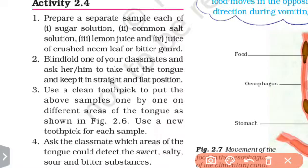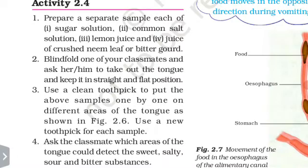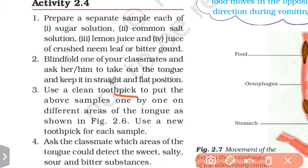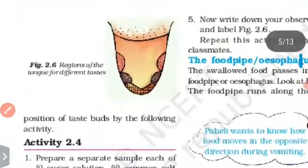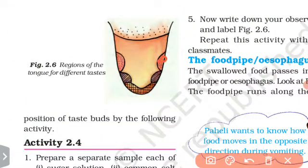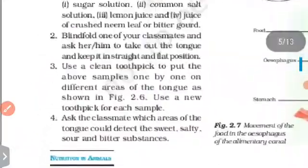Blindfold a classmate and ask them to take out their tongue and keep it in a straight and flat position. Use a clean toothpick to put the sample one by one in different areas of the tongue as shown in figure 2.6. Use a new toothpick for each sample.